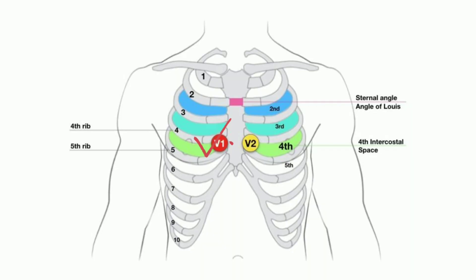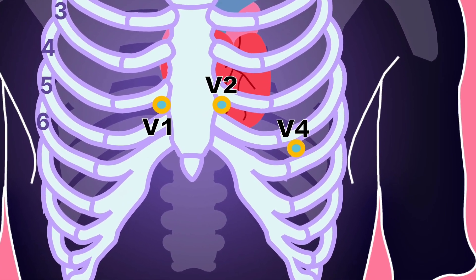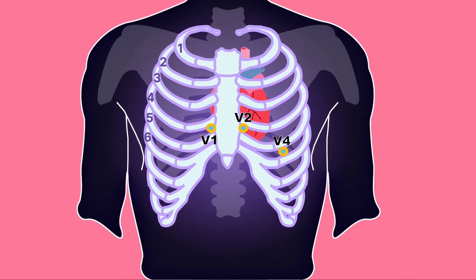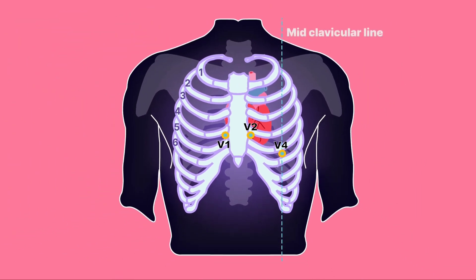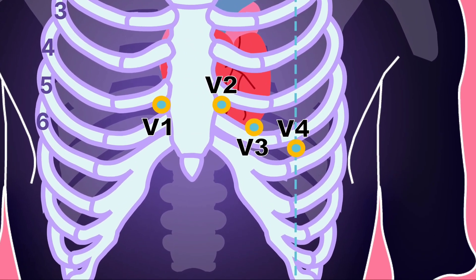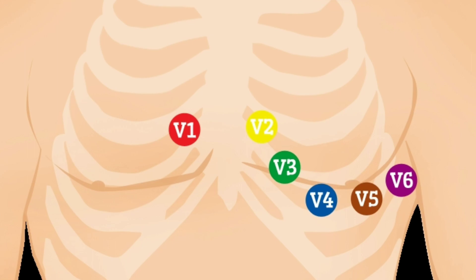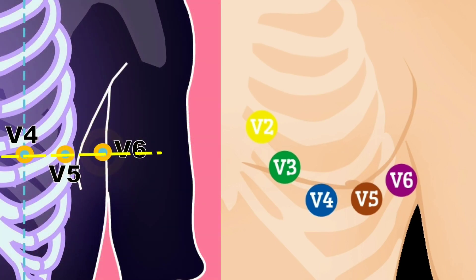Once done with V1 and V2, proceed to the next leads. As a rule, place V4 before V3, in the fifth intercostal space along the mid-clavicular line — as if drawing a line from the center of the patient's clavicle. V3 should be placed directly between V2 and V4. V5 is placed between V4 and V6. V6 is placed over the fifth intercostal space along the mid-axillary line. Note that V4, V5, and V6 will come in the same horizontal line in the fifth intercostal space.